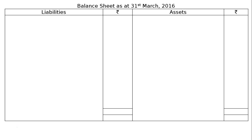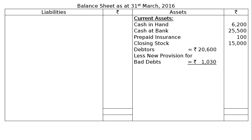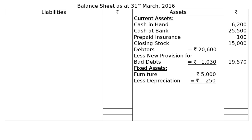In the balance sheet as at 31st March 2016, on the asset side, current assets are: cash in hand rupees 6,200, cash at bank rupees 25,500, prepaid insurance rupees 100, closing stock rupees 15,000, and debtors rupees 20,600 less new provision for bad debts rupees 1,030 — giving rupees 19,570 in the final column.